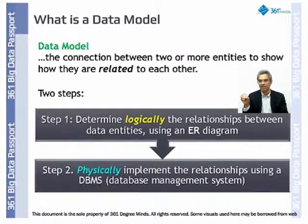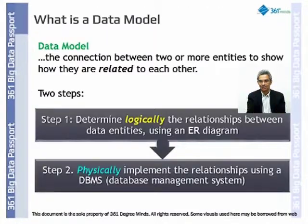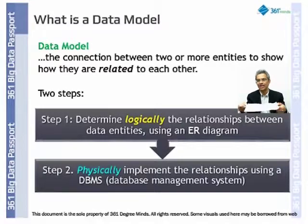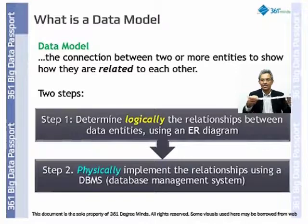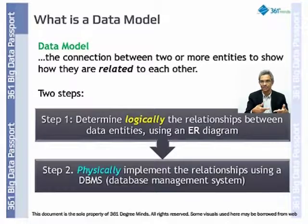When you put it in a physical model, that is when you actually make data accessible. You can't access the data when it's on paper. On paper, it says this data is going to be related to this via this key and therefore it will look like that. But if you take that and implement it in a database tool, it becomes physically available to you. That is the difference between a logical model and a physical model.